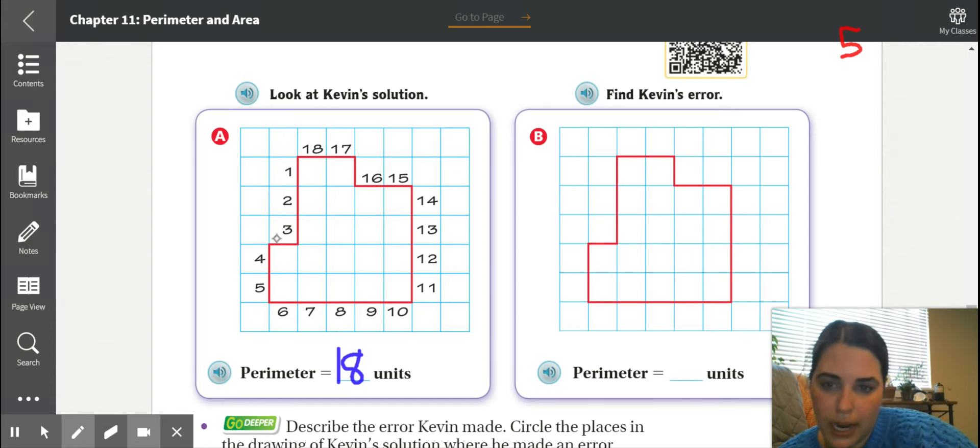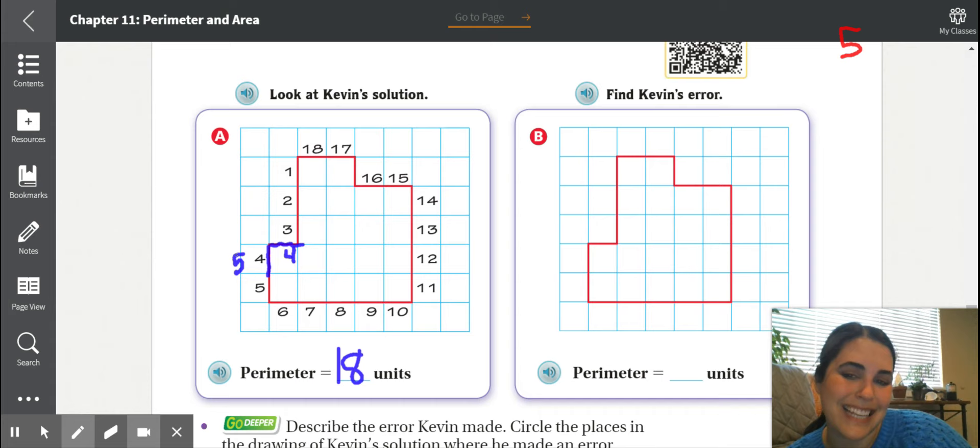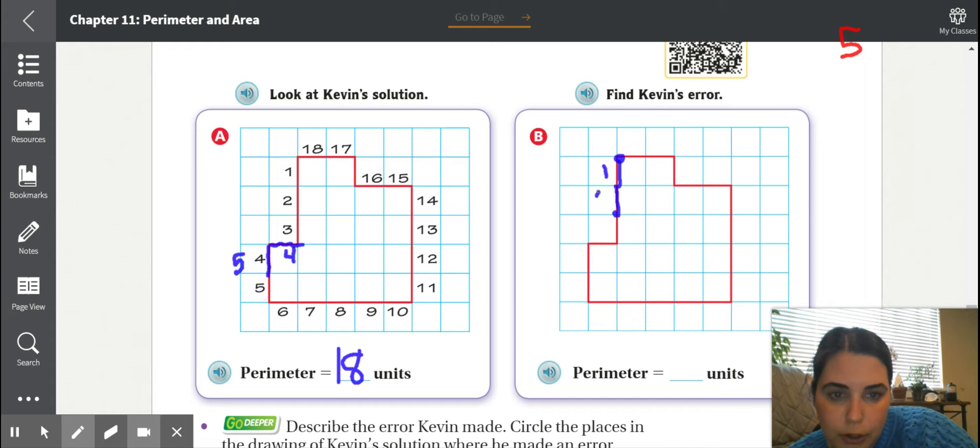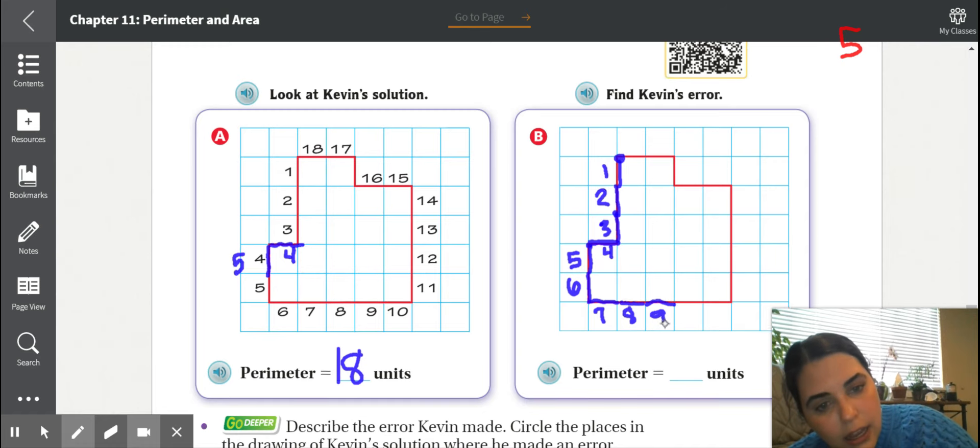He says that this is 18, but why is Kevin wrong? Can you go through and see if you can find where he made a mistake? One, two, three, right here. This space here, this should be four and this one should be five. So he made a mistake because he skipped one. Let's do it the right way. One, two, three, and then this one here. We can't forget that one. That's four, five, six, seven, eight, nine.